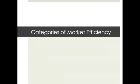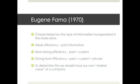Now I'm going to share my perspective on market efficiency categories. Thanks to Eugene Fama, market efficiency can be defined in three parts: first is weak efficiency, second is semi-strong efficiency, and third is strong form efficiency. These three categories are characterized by the type of information incorporated into the share price. To determine this, we need our own estimate of a company's value so we can assess how the market reacts.